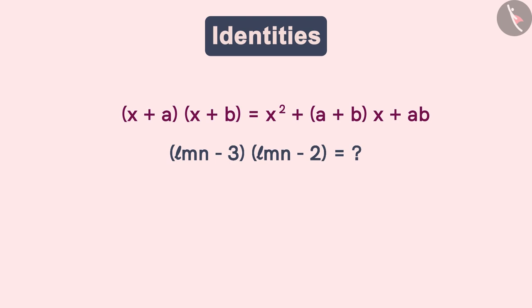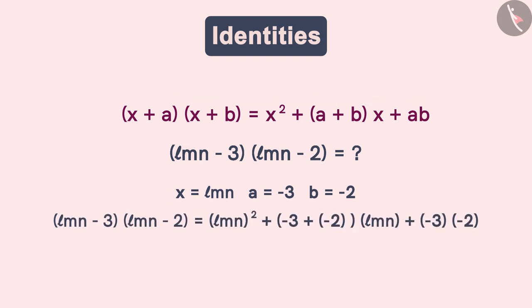Your x can be taken as ℓmn, a is minus 3, and b is minus 2. Let's substitute them in the identity. After further simplification we get this as our final answer.